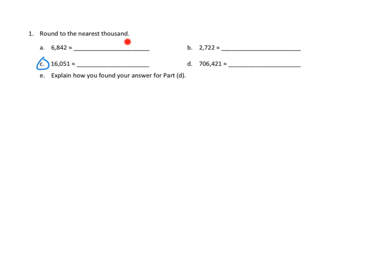They asked us to round to the nearest thousand. As I look at this number, I see that there are 16,000s in this number. So that means we are either going to be rounding to 16,000 or 17,000. As I look to the value to the right — my hundreds — the midpoint for 16,000 to 17,000 would be 16,500, and this number is definitely less than that, because this is 16,000 with zero hundreds. So we know this is going to be closest to 16,000 when we round to the nearest thousand.